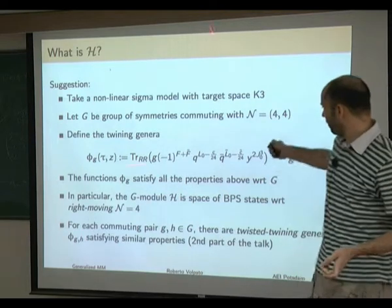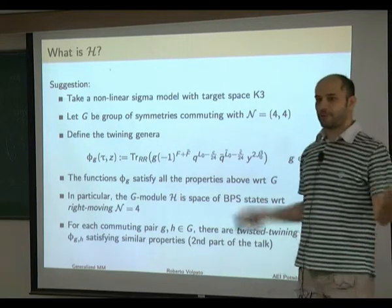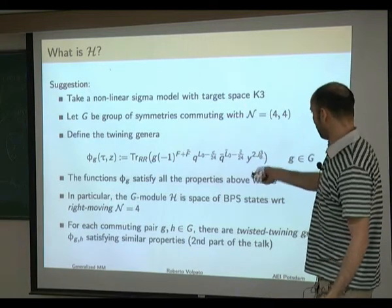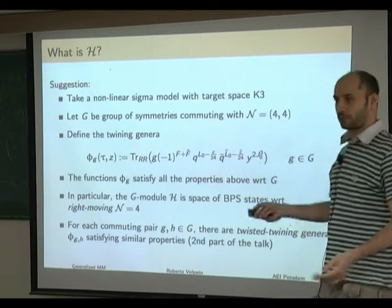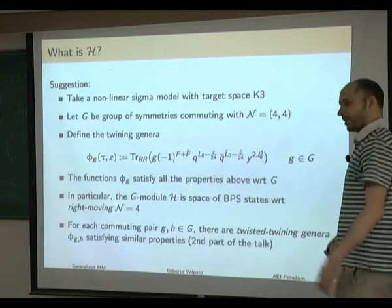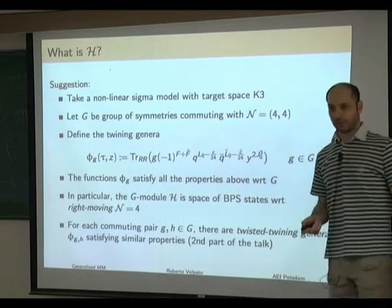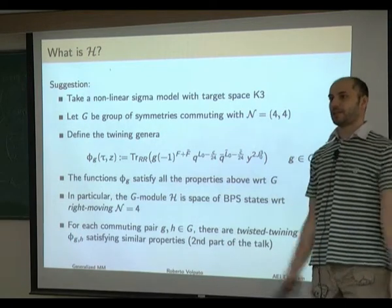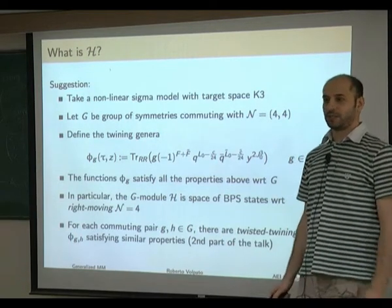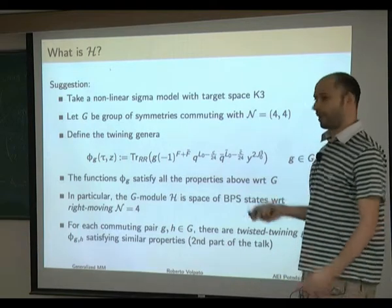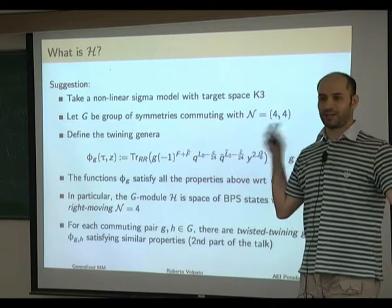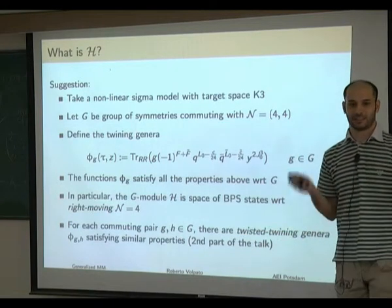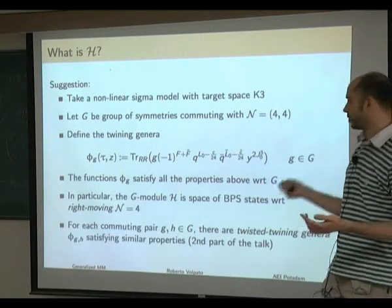It is clear from this picture that if we could find a nonlinear sigma model with target space K3 where the group G is M24, we would immediately explain Mathieu Moonshine. But as has been told, this nonlinear sigma model does not exist. So it's not clear if there is any relation between nonlinear sigma models on K3 and Mathieu Moonshine — these theories are perhaps not exactly the right ones to explain it.